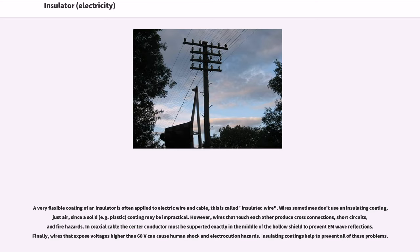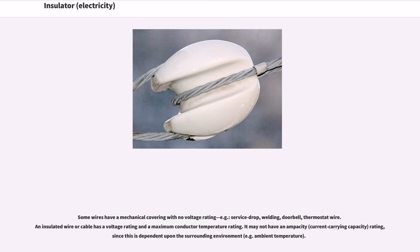Insulating coatings help to prevent all of these problems. Some wires have a mechanical covering with no voltage rating, for example service drop, welding, doorbell, and thermostat wire. An insulated wire or cable has a voltage rating and a maximum conductor temperature rating. It may not have an ampacity rating, since this is dependent upon the surrounding environment, for example ambient temperature.